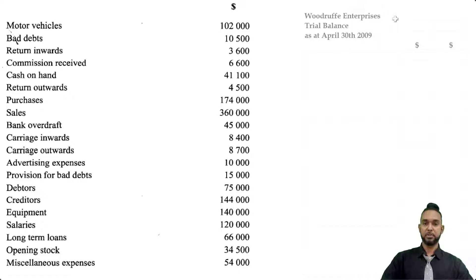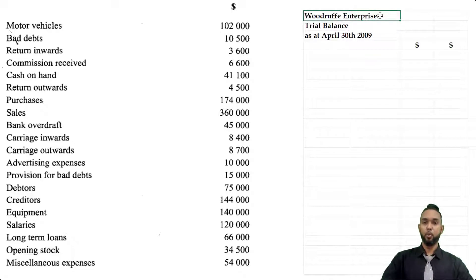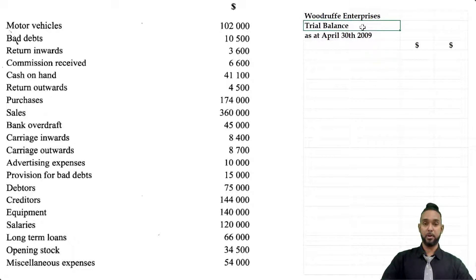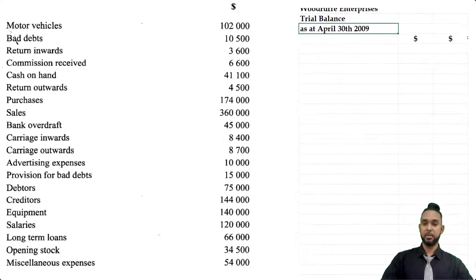Let's pull up our trial balance and be sure to head up your statements properly: Woodruff Enterprises — name of the entity; Trial Balance — name of the statement; and the appropriate date, as at April 30th, 2009.